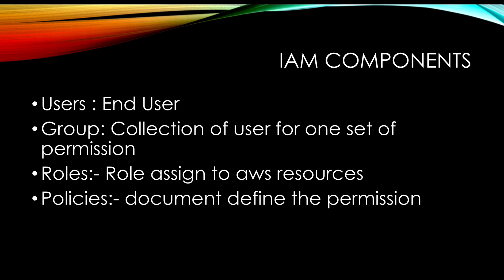The key components of IAM are: Users — these are the end users we will create in the lab. Groups — a group is a collection of users for a set of permissions; you can create a group for a specific department and add users to it. Once you assign a policy to a group, it will apply to all users who are part of that group.